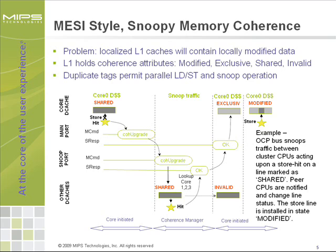Hardware coherency provides a high-performance solution by adding coherent attributes to each cache line. Modifications to a particular line must be coordinated with CPU peers' cache states, and line changes are only permitted after certain cache attributes have been obtained. For the 104K coherent cluster, the MESI cache attribute style has been implemented. Cache lines can be in states modified, exclusive, shared, and invalid. The CPU has permission to modify data after the line has reached the exclusive state. After modification, the line is marked as modified. Another CPU requesting the same line will receive the modified data, and the cache line attribute of shared is installed for both CPUs.